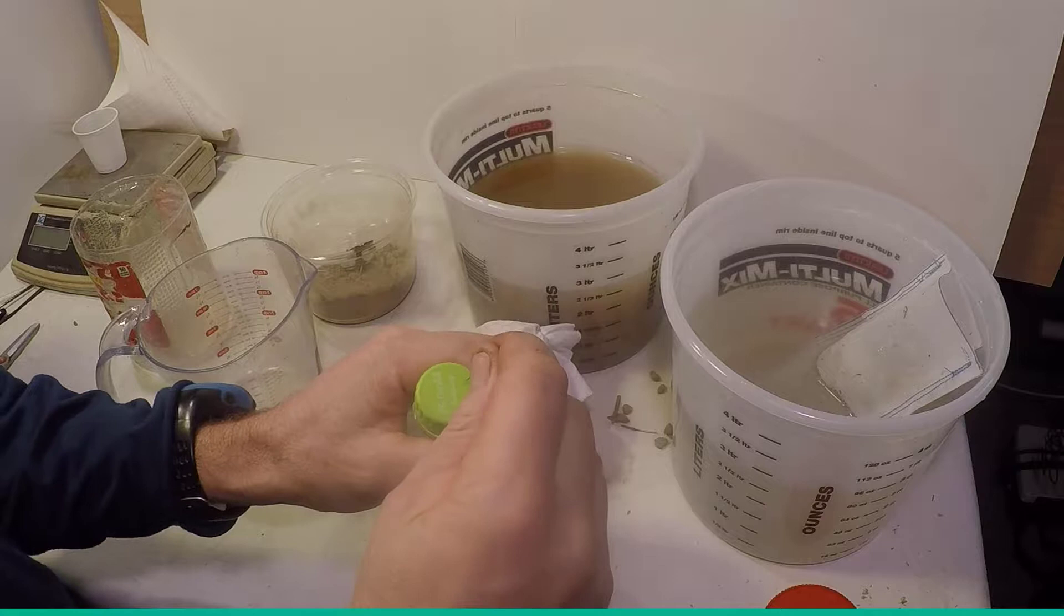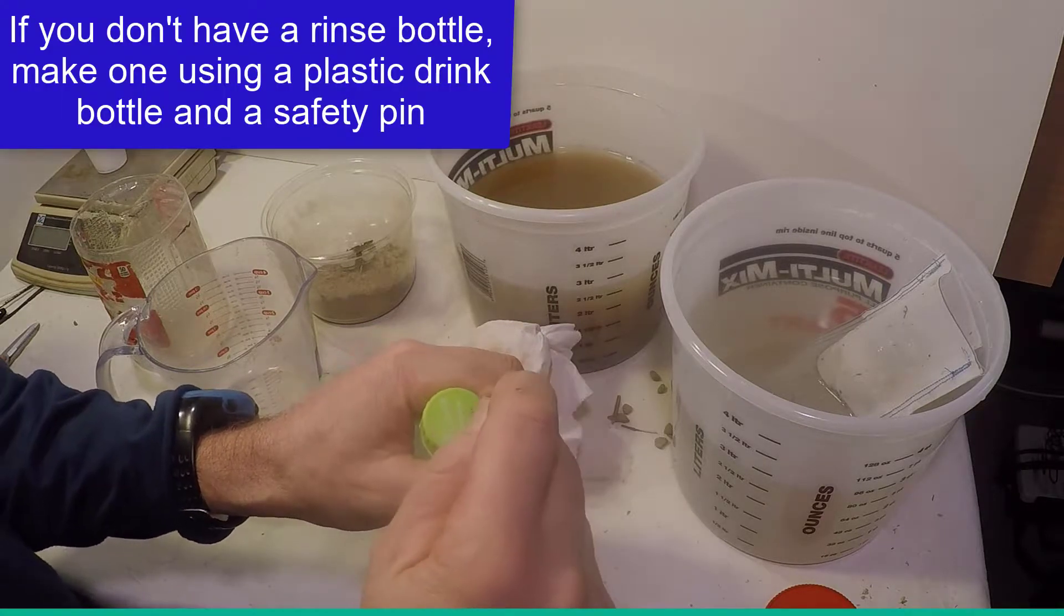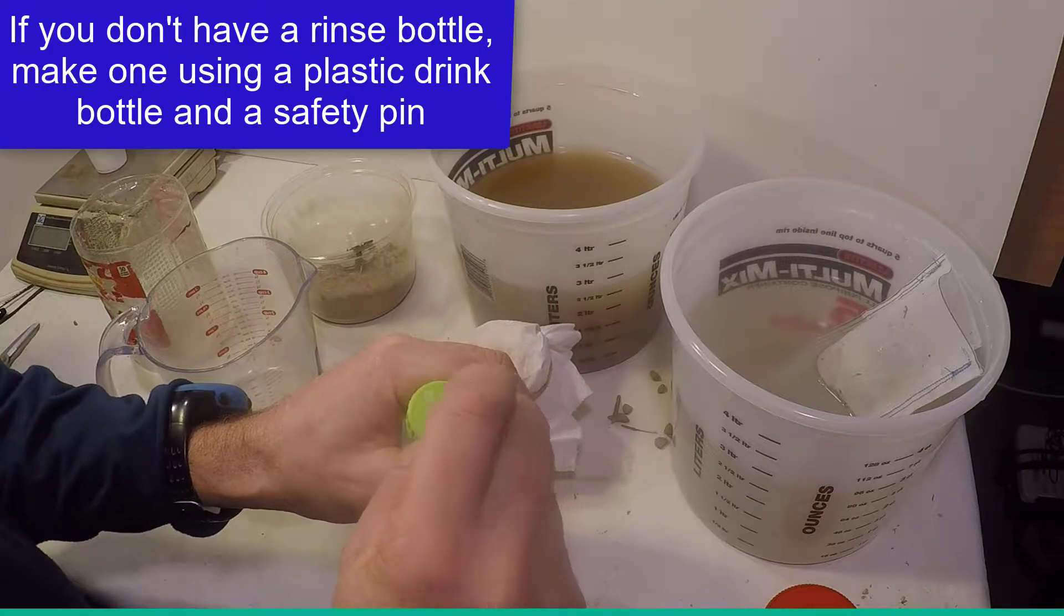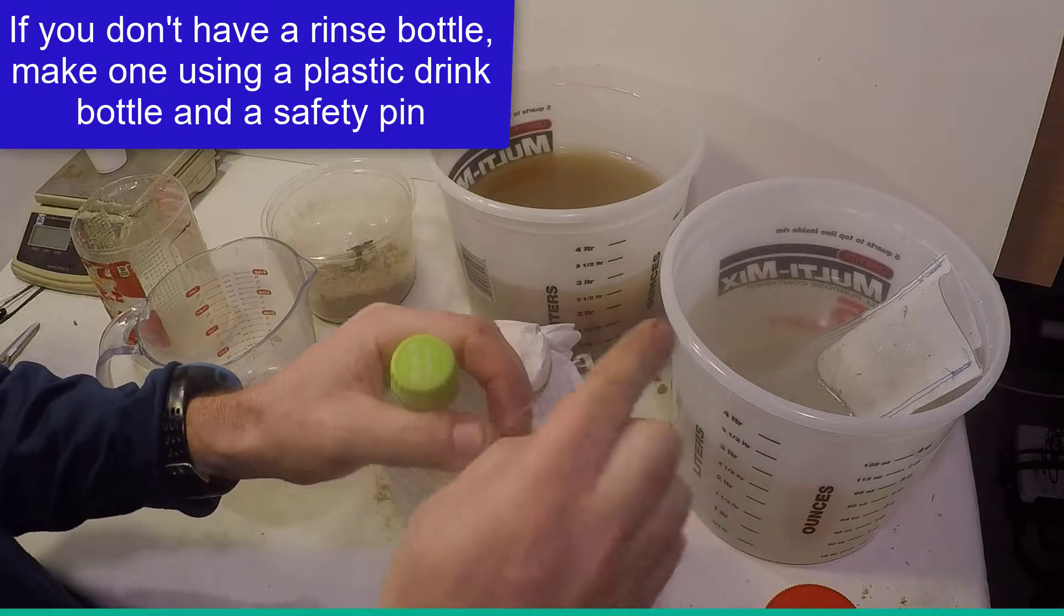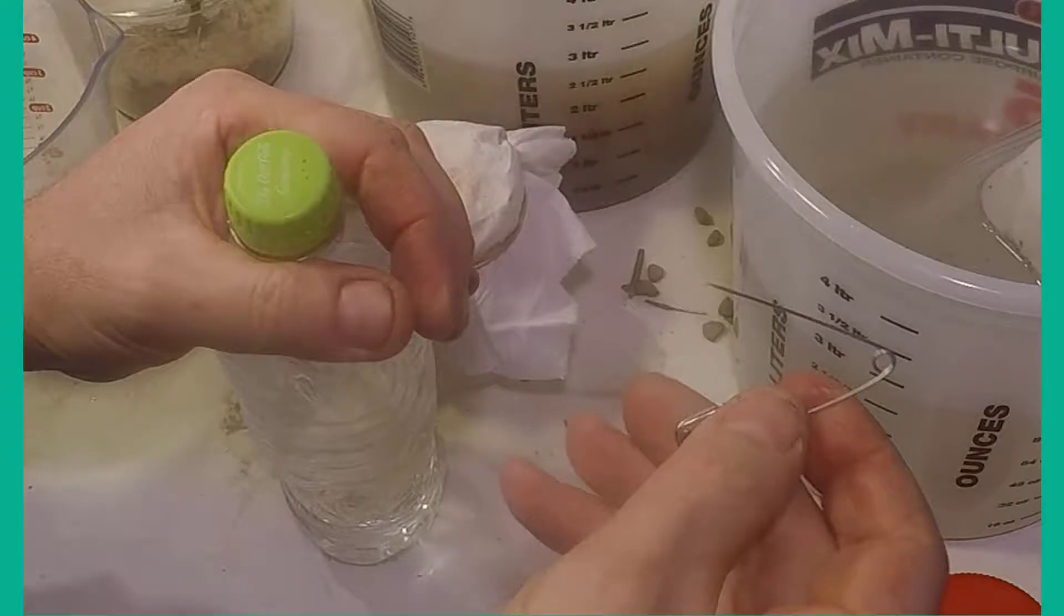You will also need a simple rinse bottle to move sand and organic matter around. If you don't have one, you can make a very effective one by punching small holes in the top of a flexible plastic drink bottle.